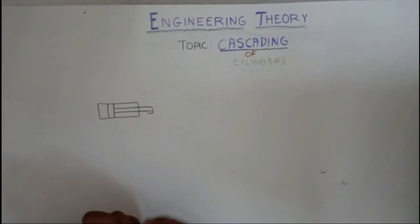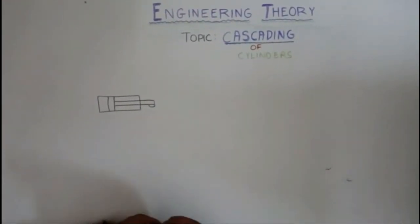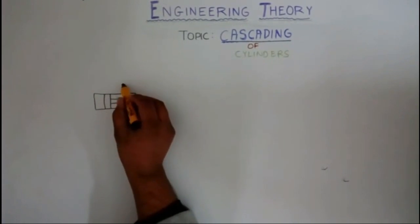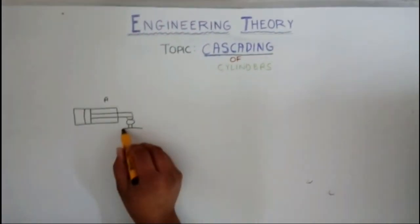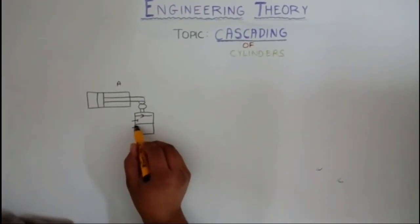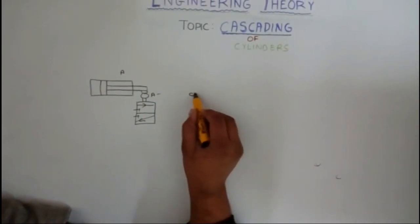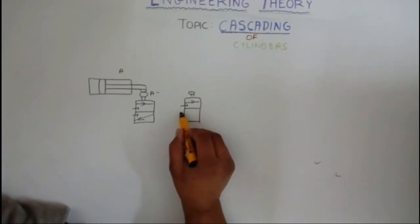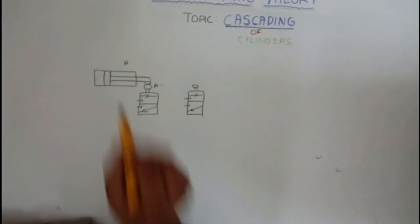In cascading problems, you will be asked to design a circuit controlling the movement of two or three cylinders. For example, let cylinder A be present, with a projection touching a 3/2 direction control valve. This 3/2 DC valve has a negative and a positive side for cylinder A.